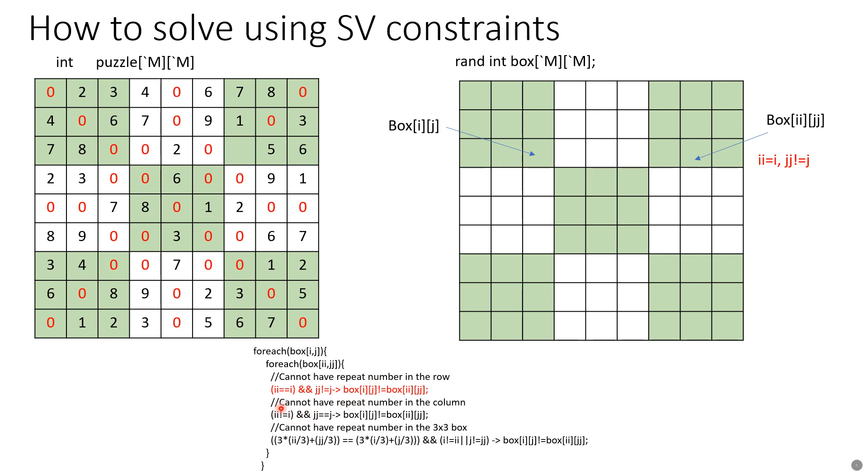We iterate over the random matrix box using two for loops. The outside for loop having index i,j and the inside for loop having index ii and jj. So basically box[i][j] and box[ii][jj] are two boxes, and the first constraint says that if ii equals i and jj not equal to j, that means in this kind of situation where we're in the same row but the column numbers are different, then the box values must be different.